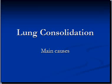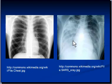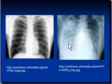We will be discussing lung consolidation, its main causes, and how it appears on a chest X-ray. Consolidation appears as diffuse opacity or opacities in the lungs that do not have sharp outlines. This is because air in the alveoli of the lungs has been replaced by certain substances.